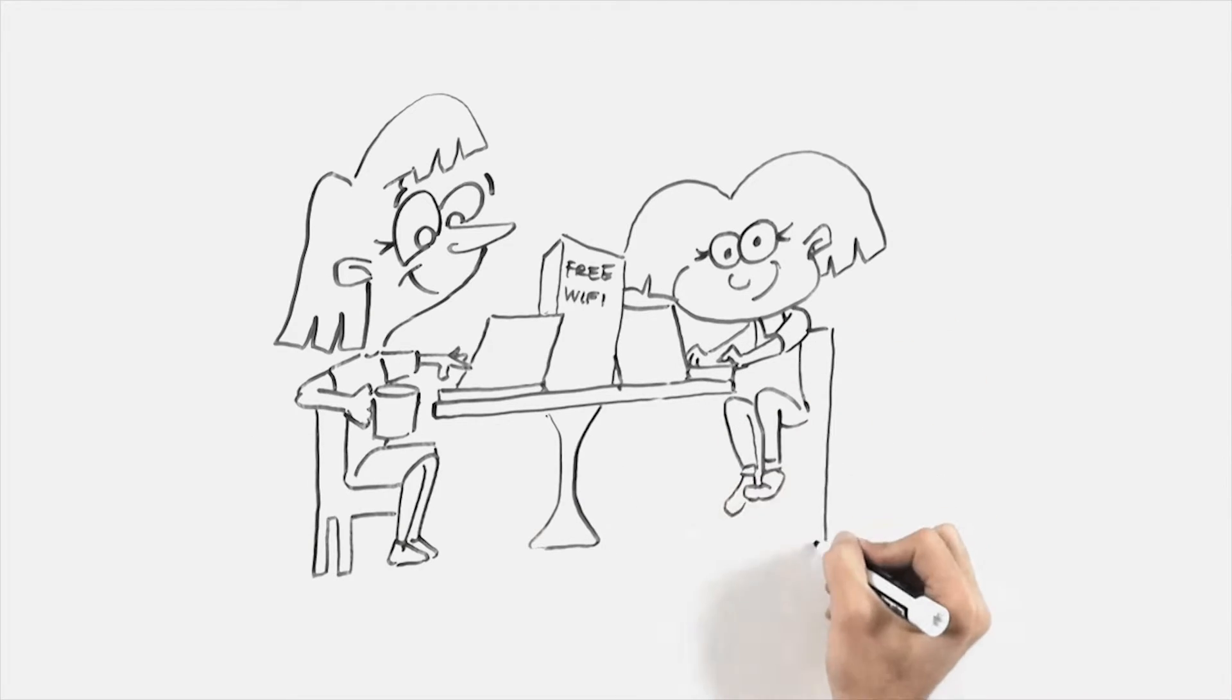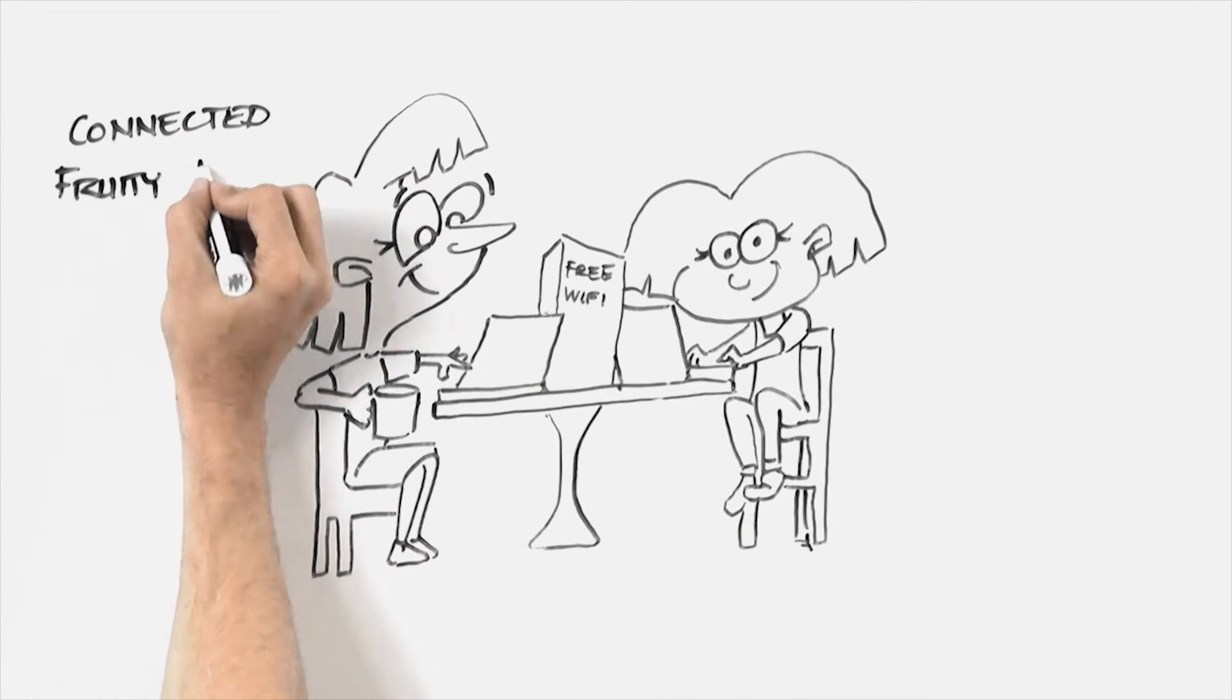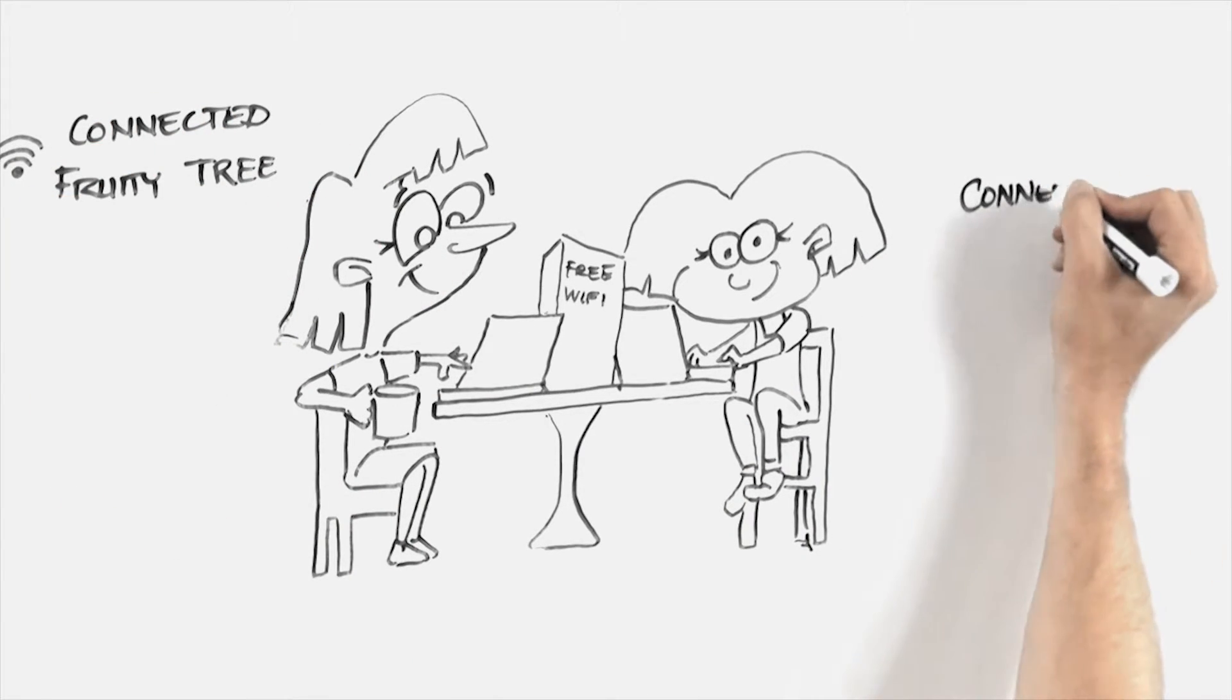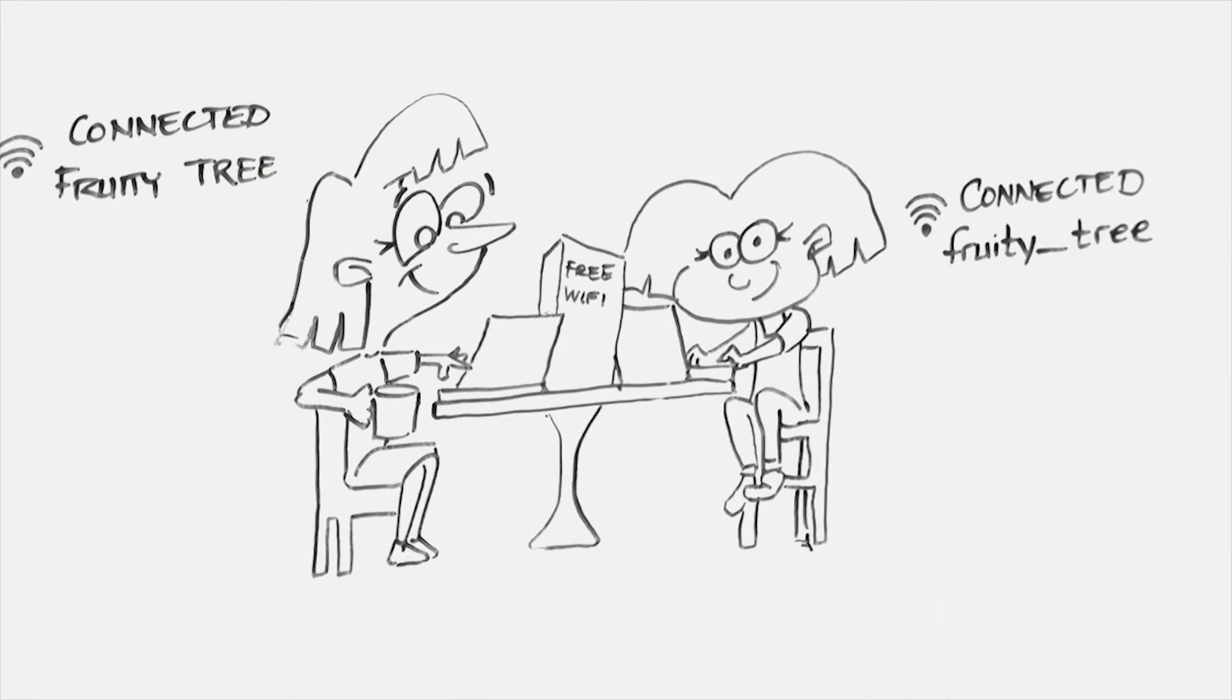Hey, which Wi-Fi did you connect to? I don't know. Let me check. I connected to Fruity Tree. Which one did you connect to? I'm connected to Fruity underscore tree. That's the one it shows on the table. There isn't an underscore in the one I connected to. Maybe what I found in that article is happening to you.